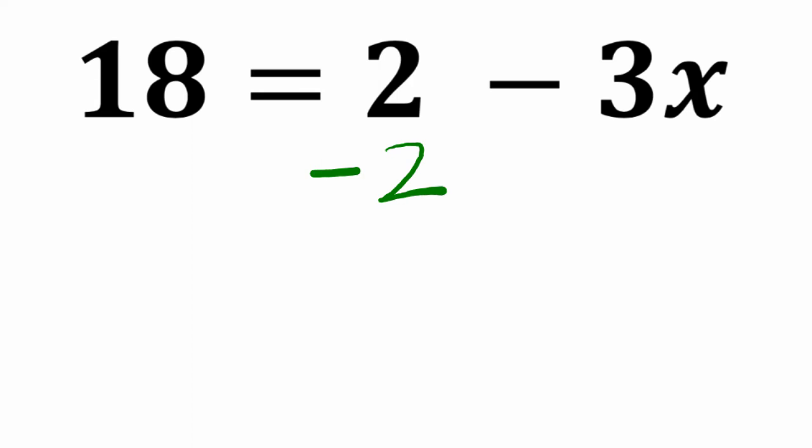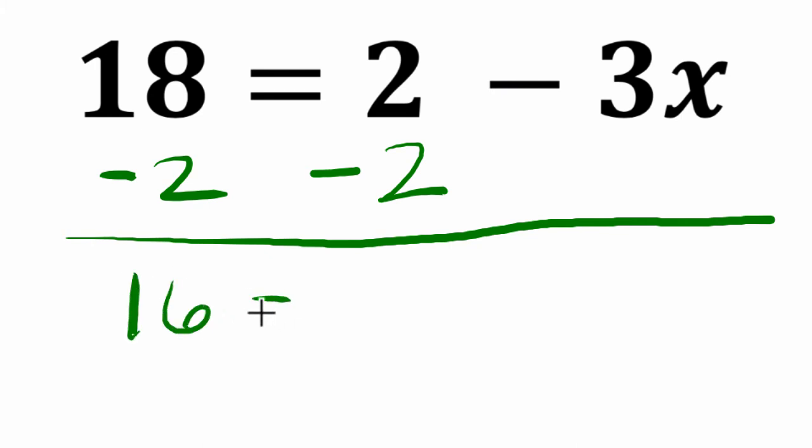I would first subtract 2 from both sides. So this is going to tell me that 18 minus 2 is 16. We take 2 from our left side of the equation. Let's do the same on the right. 2 minus 2 is 0, and what's left is subtracting 3x or negative 3x.